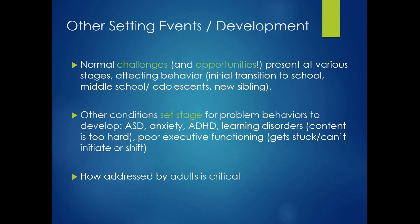There are setting events — we might call these developmental milestones — that can affect the occurrence of problem behavior. These might be normal challenges or opportunities that present at various stages. They can affect behavior, such as the initial transition of a child to school, going into preschool or kindergarten, transition to middle school, transition to high school, the stage of adolescence, or when there's a new sibling in the home. These are all times that you may see a setting event for problem behaviors to occur.